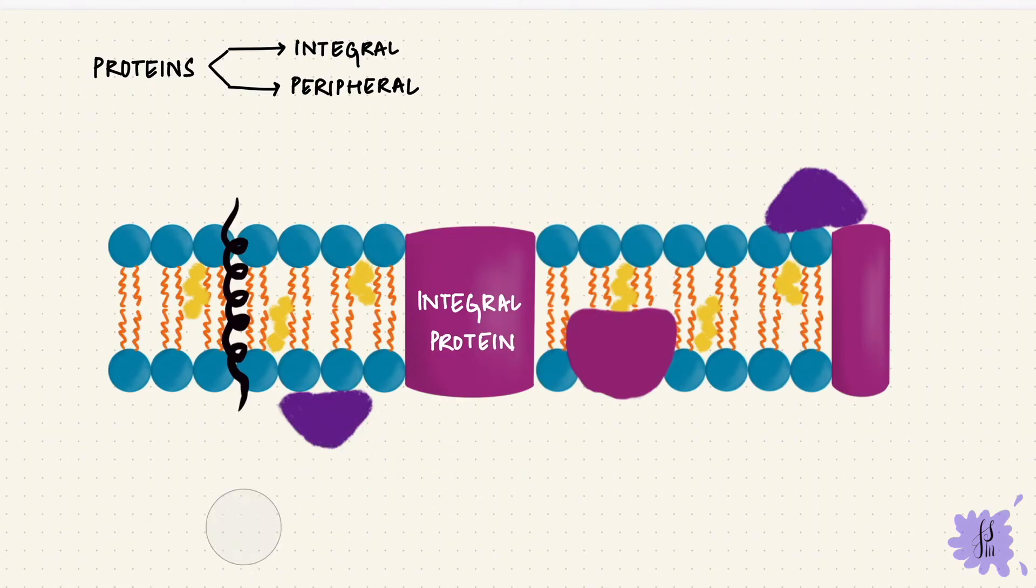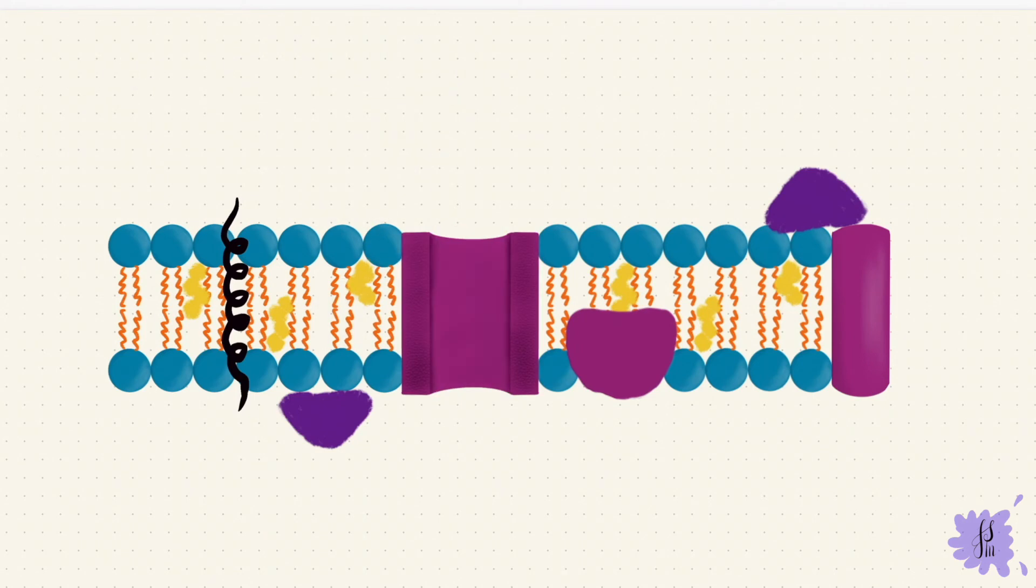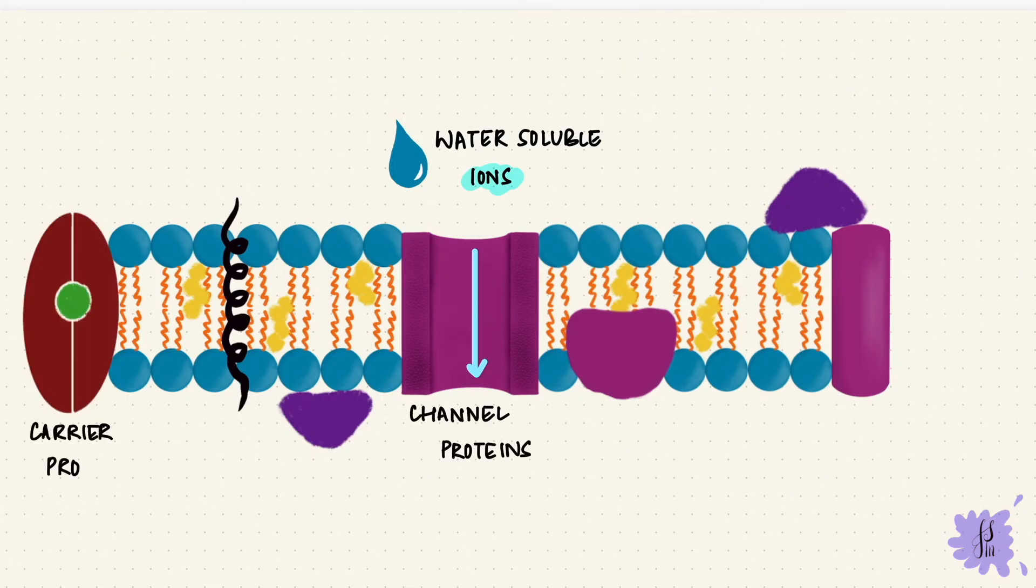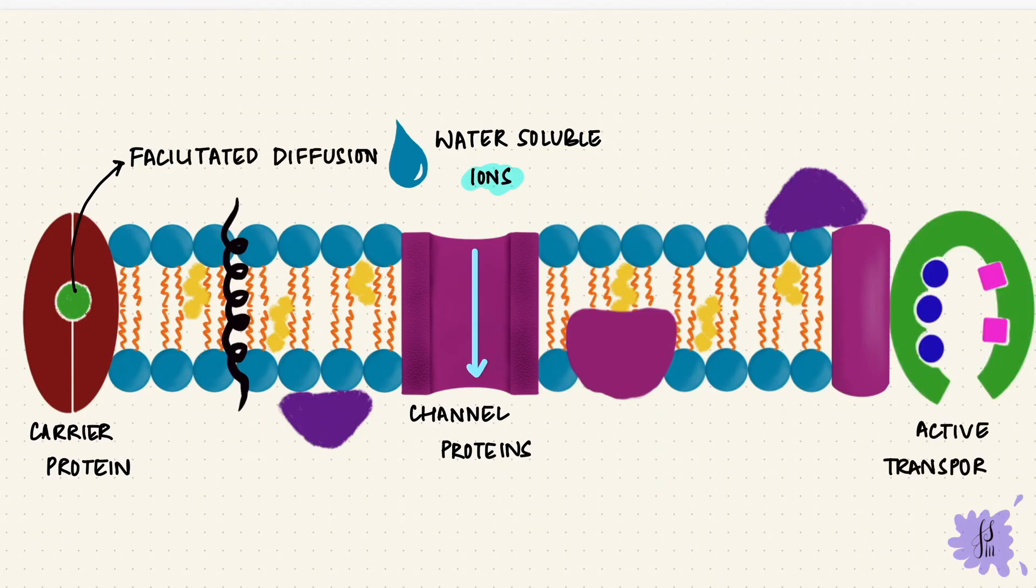But the integral proteins have a lot of functions. They can form channels for substances that are not lipid-soluble but are water-soluble, like ion channels. They can also form carrier proteins for things like glucose for facilitated diffusion. They can act as pumps for active transport, like the sodium-potassium ATPase pump. So they're very important for both passive and active transport.